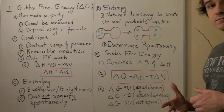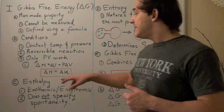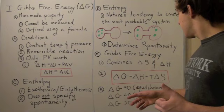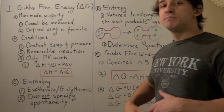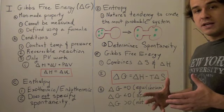Now what Gibbs free energy basically tells us is that even an exothermic reaction can be non-spontaneous if the change in entropy is negative enough. And what it also tells us is that an endothermic reaction could be spontaneous if the increase in entropy is large enough.